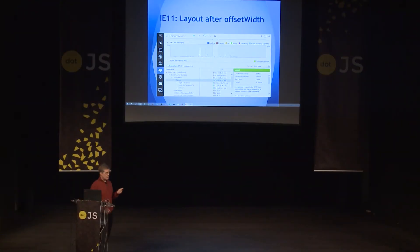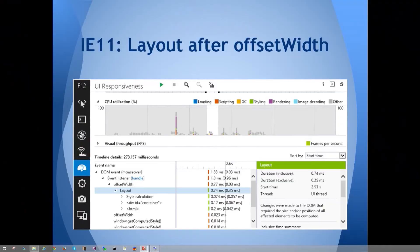When you see that yellow triangle in Chrome, it gives you an idea that you may be doing something wrong. In IE11, there's a UI Responsiveness tool similar to Chrome's timeline tool. If you see an offset width followed immediately by a layout, that means you have a forced layout. You'll notice right below it there's another offset width without a layout below it — because you already forced it to calculate the page, so the second one is almost free.